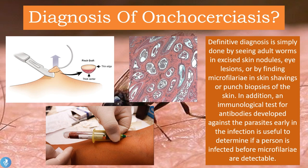The definitive diagnosis of Onchocerciasis is done by seeing the adult worms in excised skin nodules, eye lesions, or by finding microfilaria in skin shavings or punch biopsies of the skin. An immunological test for antibodies developed against the parasite early in the infection is useful to determine if a person is infected before microfilaria are detectable. A blood test will show high levels of eosinophils, and we can also test for specific antibodies produced against the Onchocerciasis parasites.